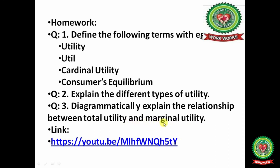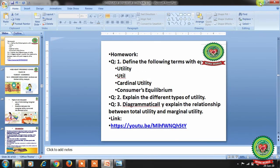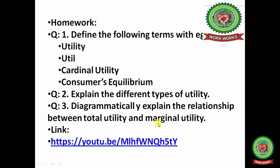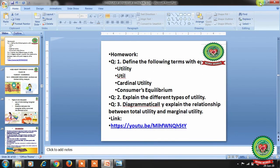Now it is time to note down the homework. First question: define the following terms with examples — utility, util, cardinal utility, consumer's equilibrium. Second question: explain the different types of utility. Third question: diagrammatically explain the relationship between total utility and marginal utility. Please go through the links on YouTube also for more clarity and prepare your notes in your copies for better learning. Thank you students for listening.